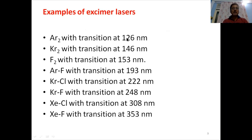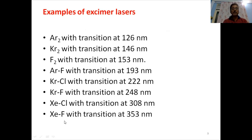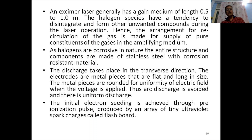Examples of excimer lasers include: Ar2 at 126 nm, Kr2 at 146 nm, F2 at 153 nm, ArF at 193 nm, KrCl at 222 nm, KrF at 248 nm, XeCl at 308 nm, and XeF at 353 nm, among others.